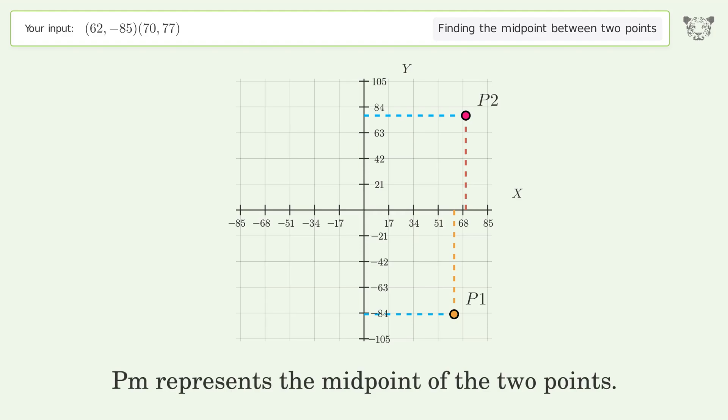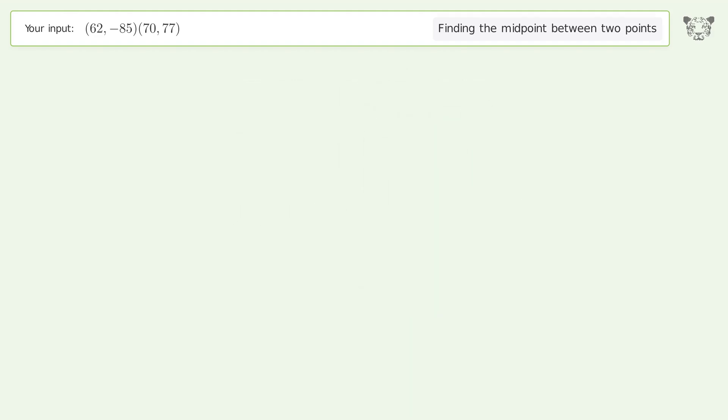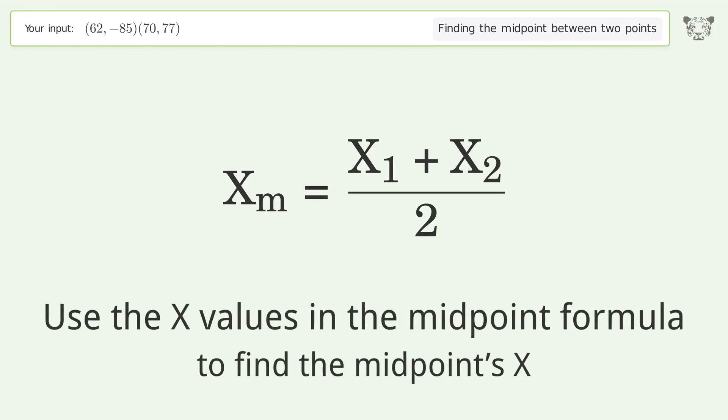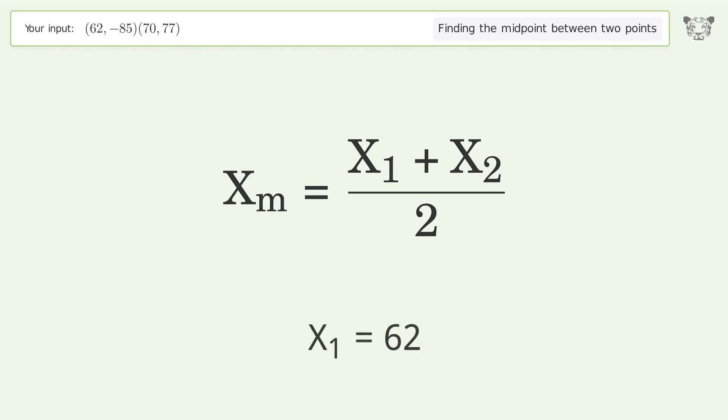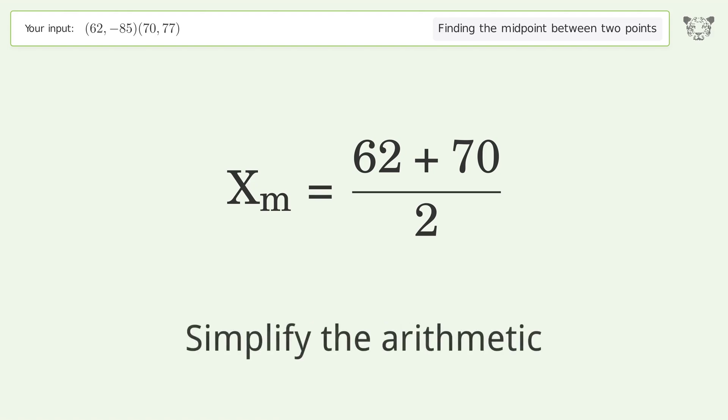Pm represents the midpoint of the two points. Use the x values in the midpoint formula to find the midpoint's x: x₁ = 62, x₂ = 70. Simplify the arithmetic.